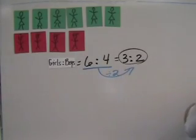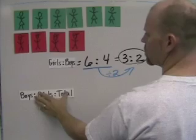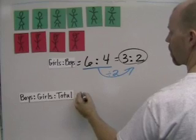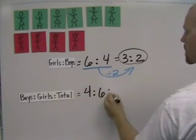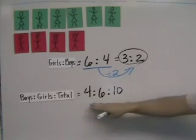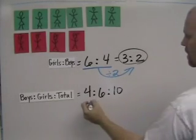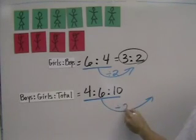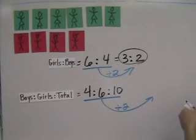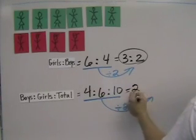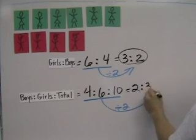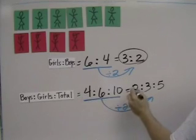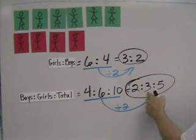And if we had the ratio boys to girls to total, that ratio would be four to six to ten. And you can reduce one of these ratios that has three numbers. All you have to do is find a number that goes into all three of these. And in this case, it's divided by two again. And so, four divided by two is two. Six divided by two is three. And ten divided by two is five. So the ratio four to six to ten reduces to two to three to five.